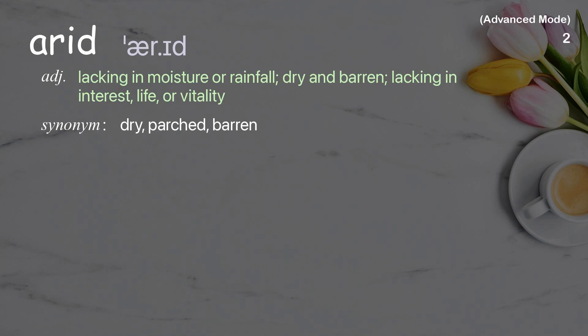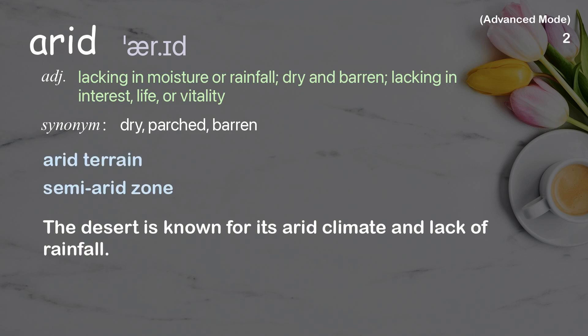Arid: Lacking in moisture or rainfall, dry and barren, lacking in interest, life, or vitality. Examples: Arid terrain. Semi-arid zone. The desert is known for its arid climate and lack of rainfall.